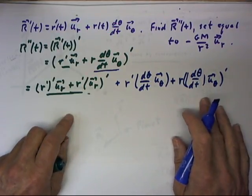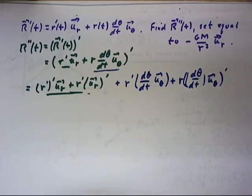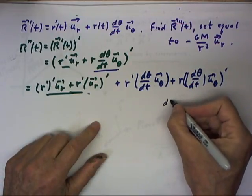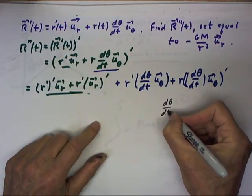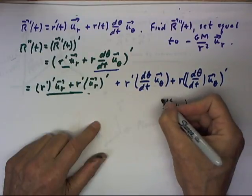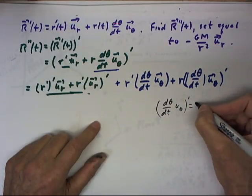Now we're going to have to simplify this. This is going to involve a product rule. And just looking at this, we see that d theta dt times u sub theta prime equals what?